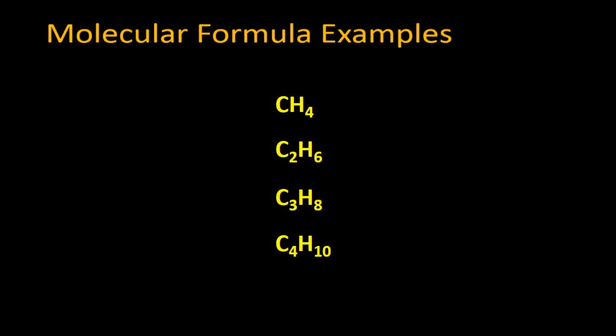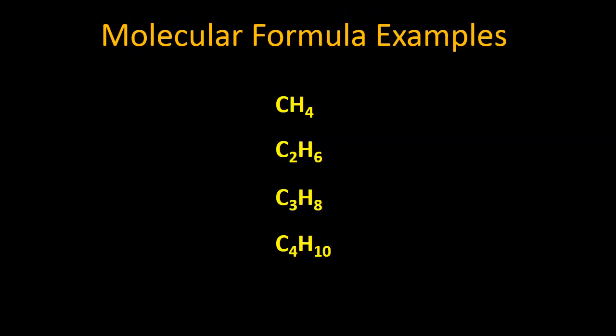The first example is methane. The molecular formula of methane is CH₄. We can easily count the actual atoms present — in methane, one carbon and four hydrogen atoms are present, which can be easily shown by the molecular formula. Basically it represents the number of actual atoms in a compound.